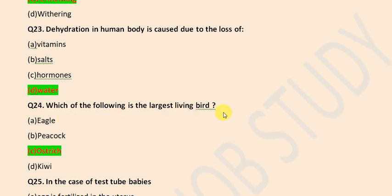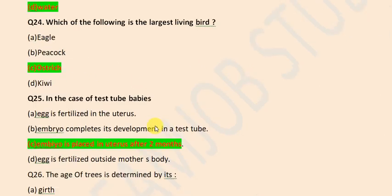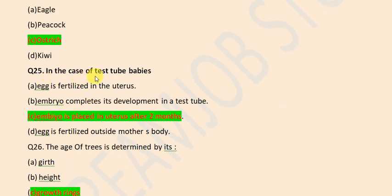Which of the following is the largest living bird? It is ostrich. In the case of test tube babies, embryo is placed in uterus after 2 months.